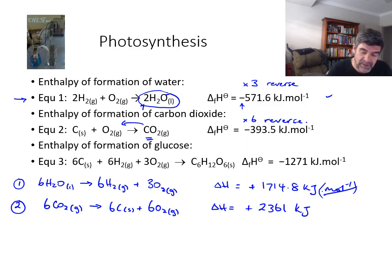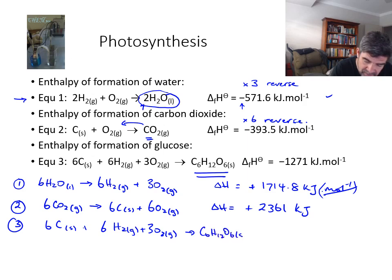The third equation actually has our glucose molecule as it's written. We're happy with that the way it is. So I can just transfer 6C solid, 6H2 gas, 3O2 gas going to C6H12O6 solid. And the delta H value here is minus 1271 kilojoules.